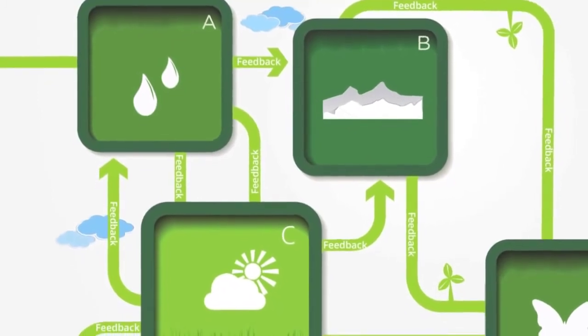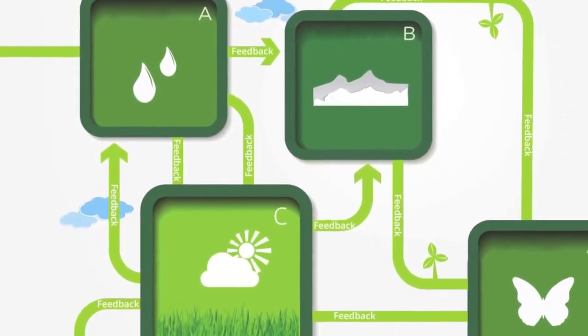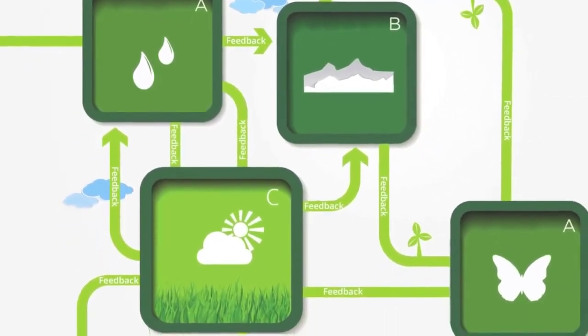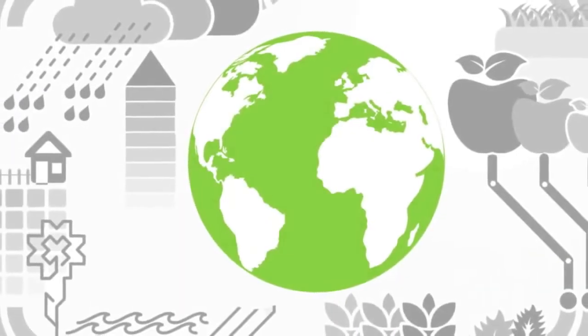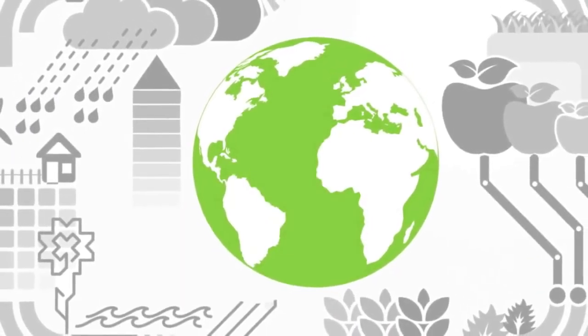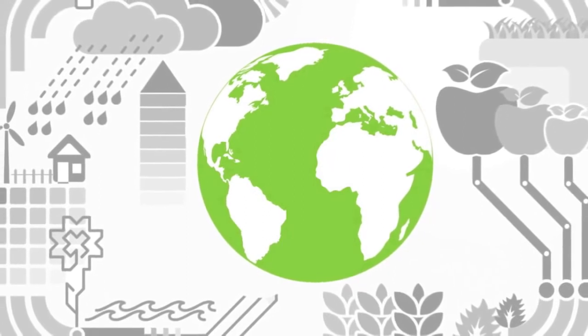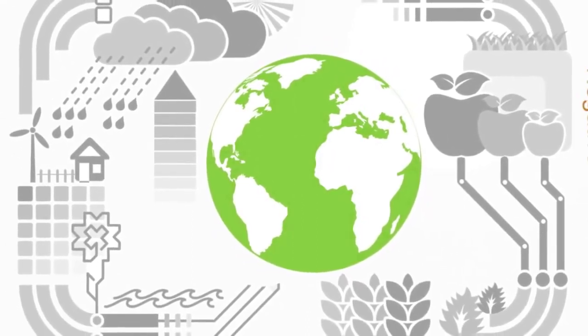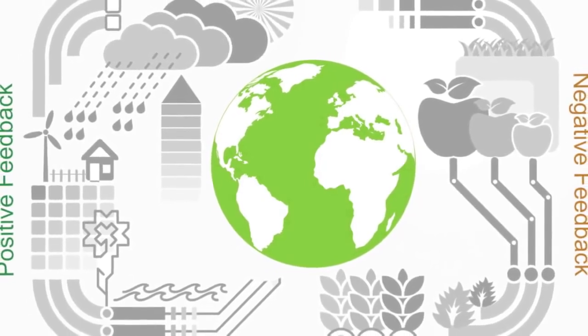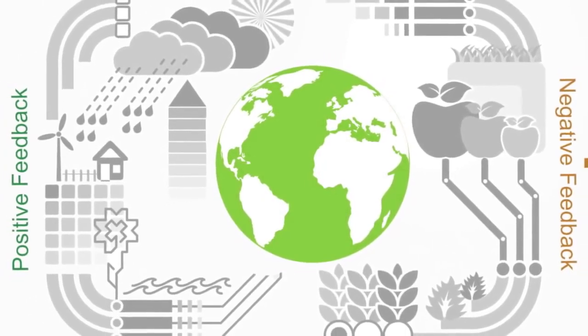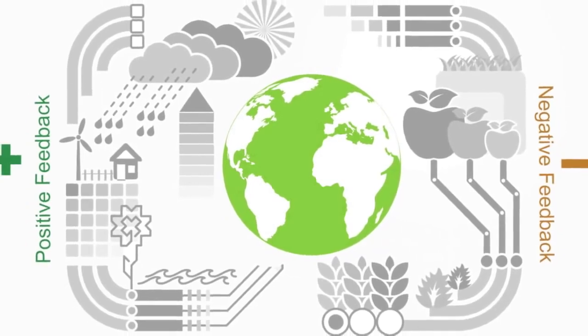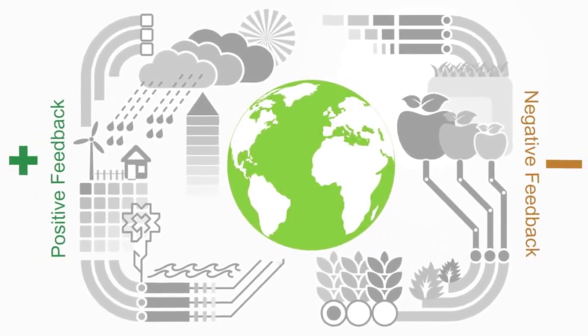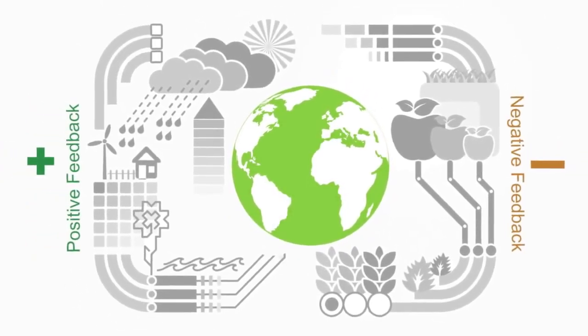This balance is typically regulated through what are called feedback loops. Earth system scientists are beginning to understand Earth's regulatory mechanism as a complex of feedback loops. These feedback loops can be either positive or negative. Positive feedback loops typically have a destabilizing effect and can lead to very rapid change. Inversely, negative feedback loops typically have a stabilizing effect on Earth's systems.